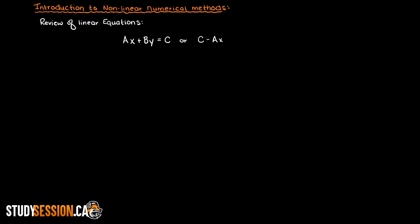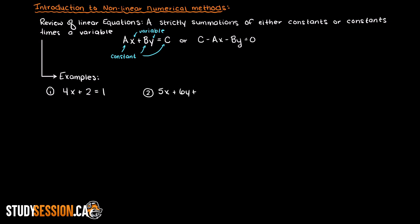Remember that linear systems of equations are just summations of either constants or constants times variables. For example, if we were given these 3 equations here, which do you think is a linear equation? Take a minute and try to decide on your own to make sure you understand.